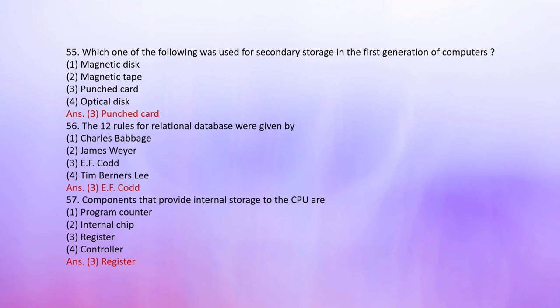Number 57: The component that provides internal storage to the CPU — 1. Program counter, 2. Internal chip, 3. [option], 4. Controller. The correct answer is: Register.